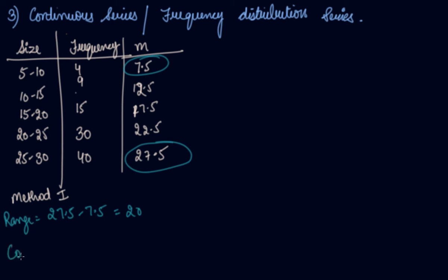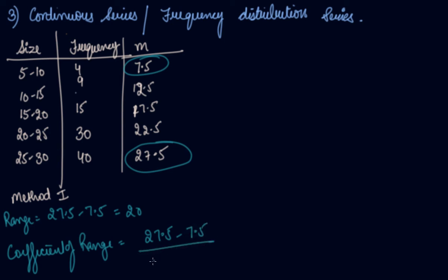To find the coefficient of range using midpoints: 27.5 minus 7.5 divided by 27.5 plus 7.5, which is 20 divided by 35, equal to approximately 0.57.